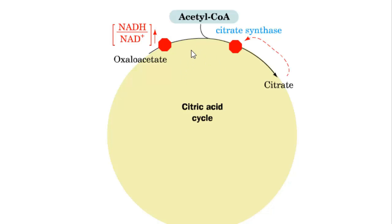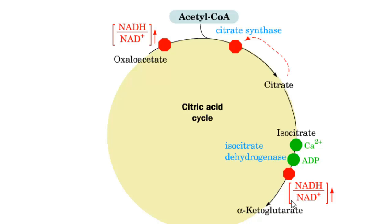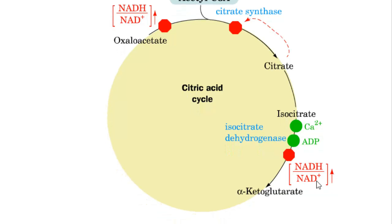The reaction of acetyl-CoA with oxaloacetate to form citrate is another important regulatory step, inhibited by both the product citrate and an increased NADH/NAD+ ratio. Isocitrate dehydrogenase, which converts isocitrate into alpha-ketoglutarate, is activated by calcium ions and ADP, and inhibited by the NADH/NAD+ ratio.